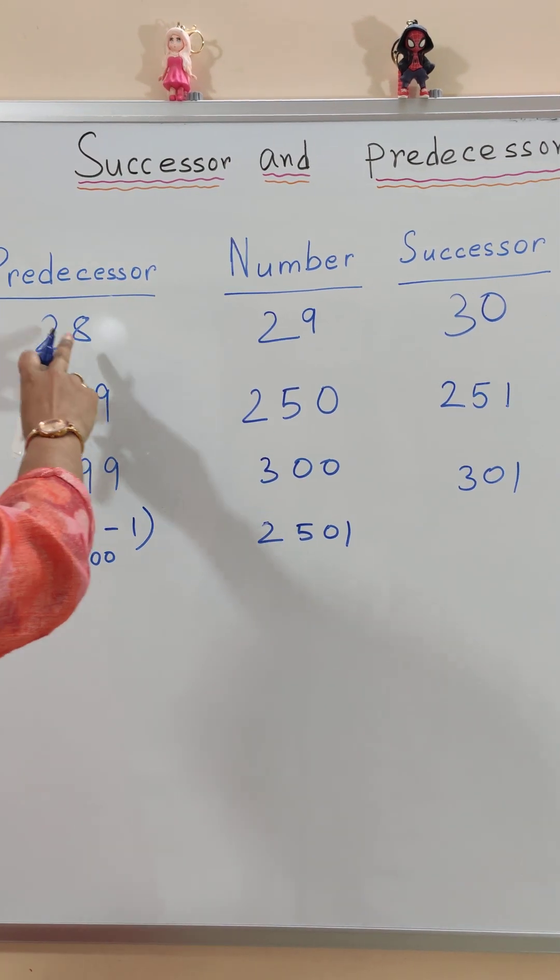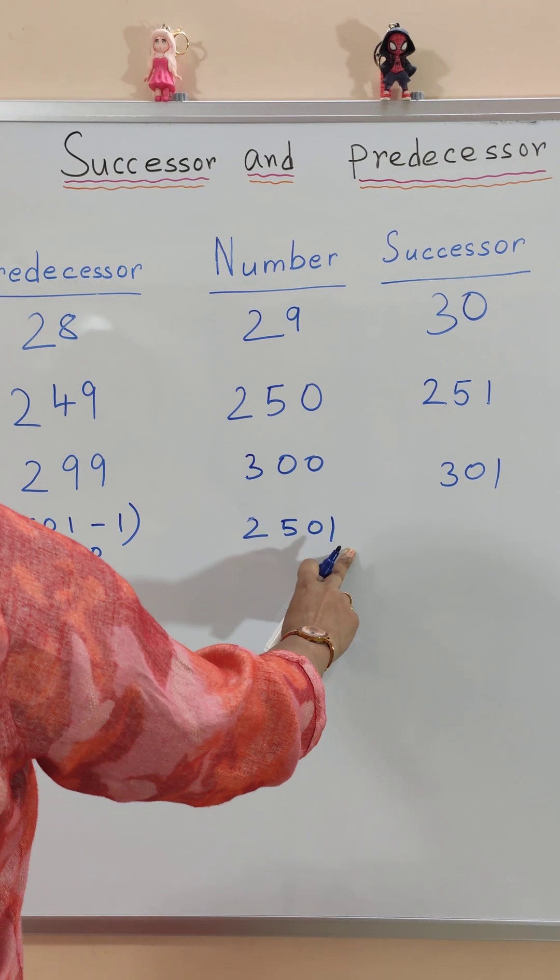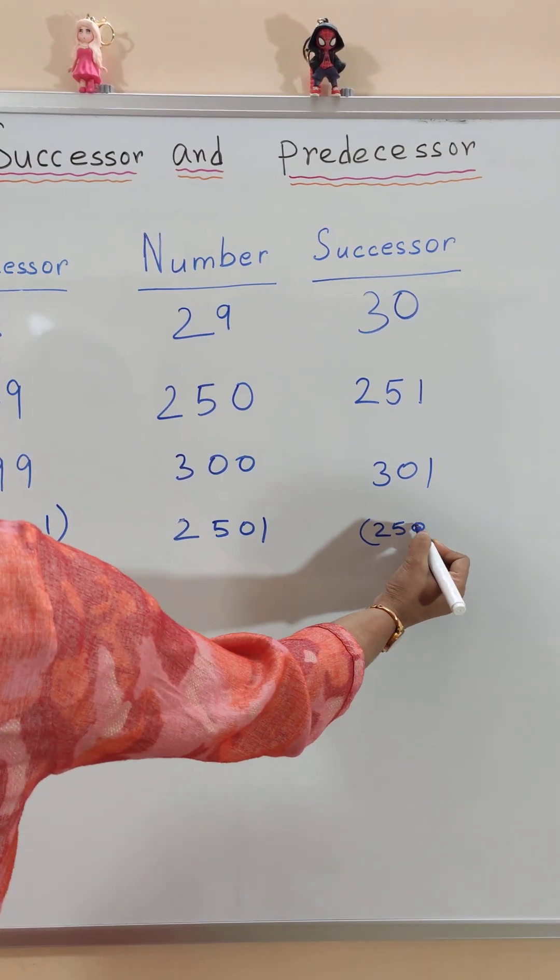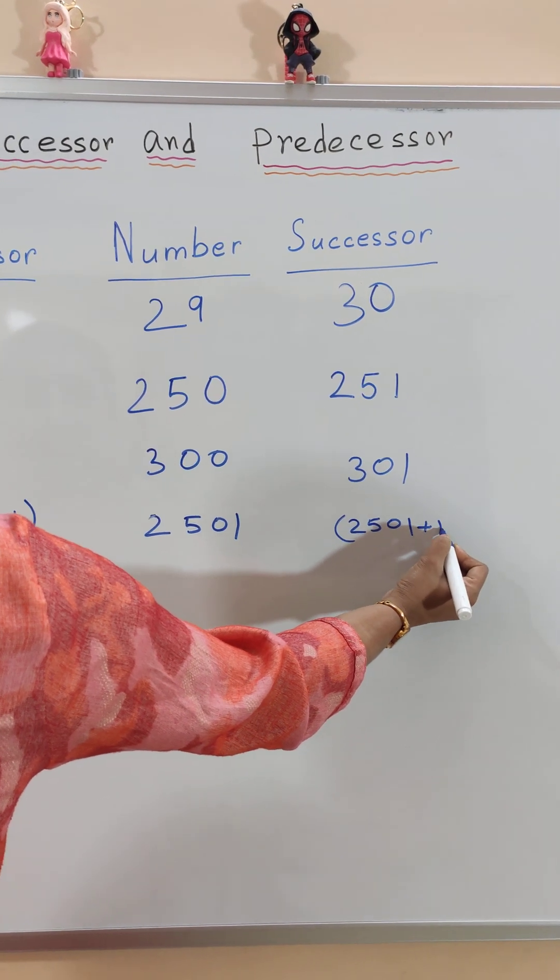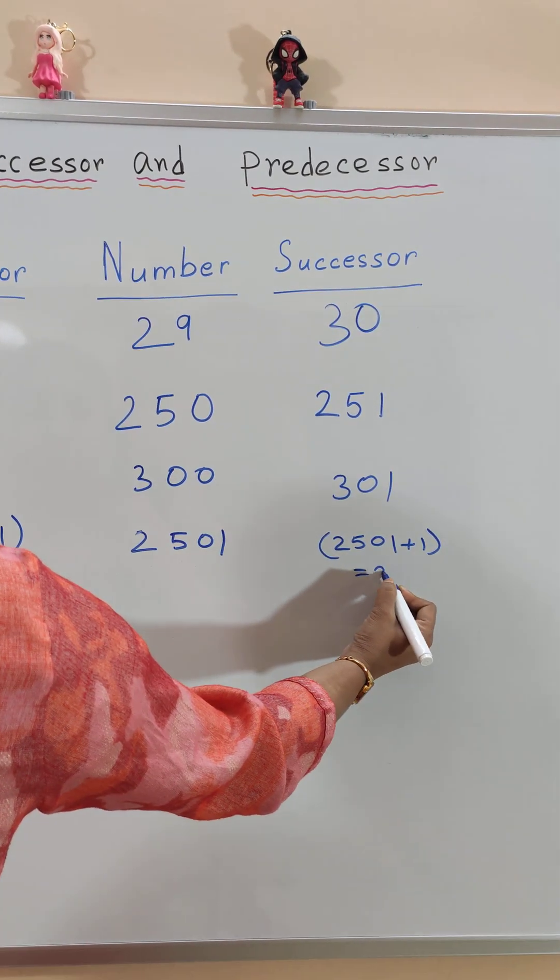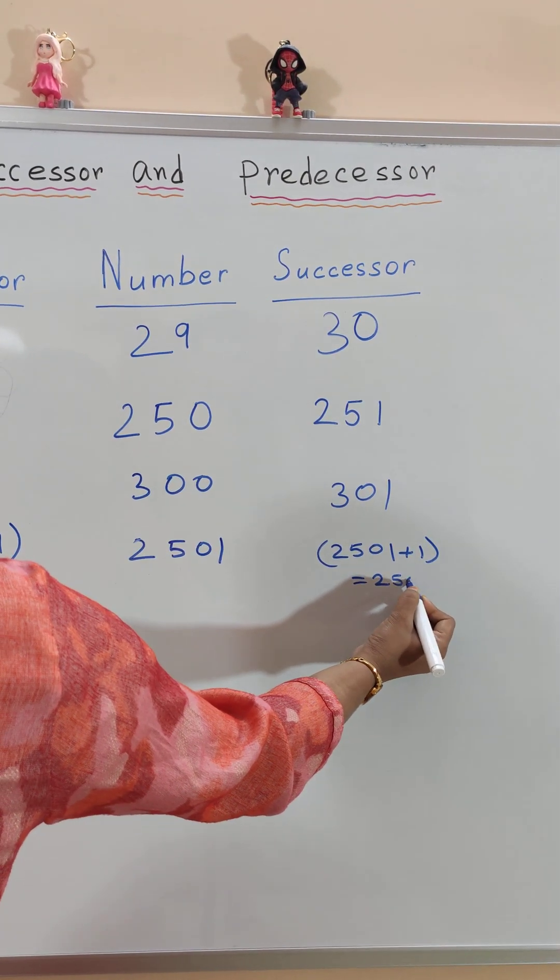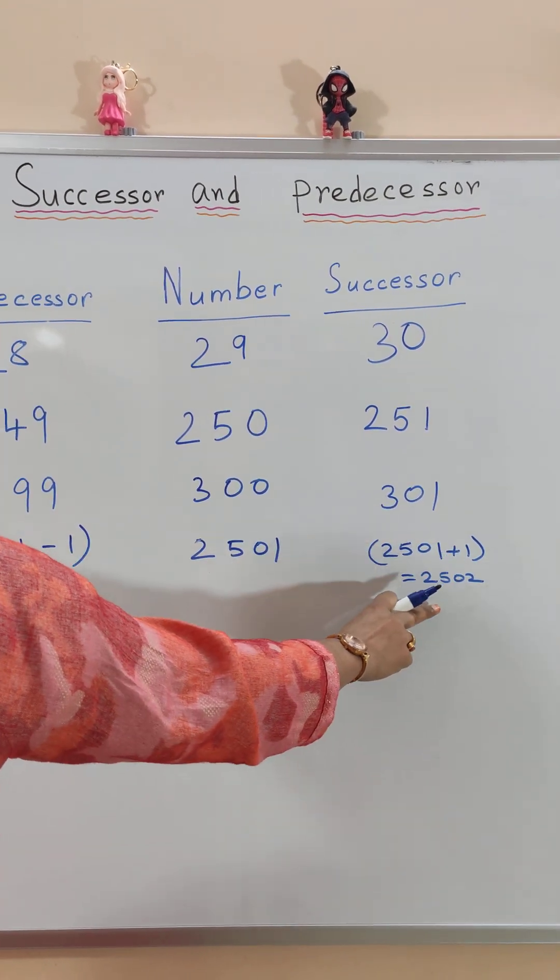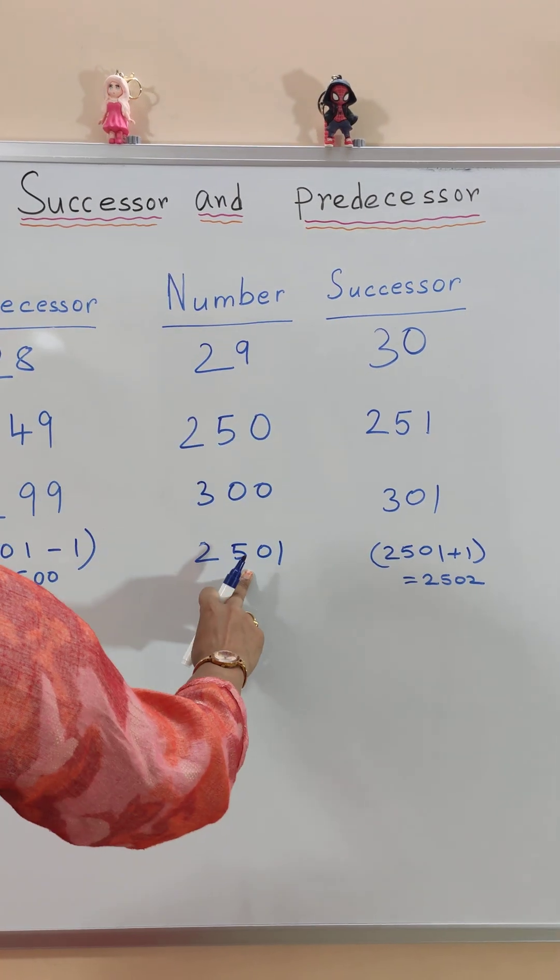Now when we find the successor of 2501, we will do 2501 plus 1 which is equal to 2502. So to find the successor, we just add 1 to the given number.